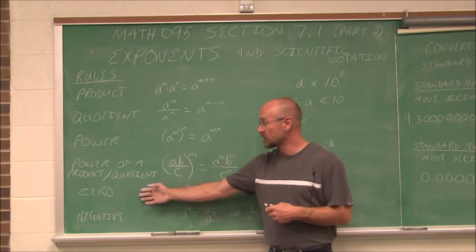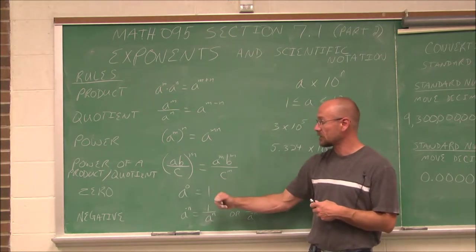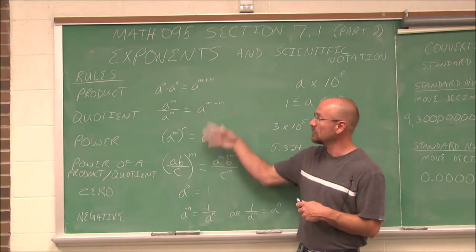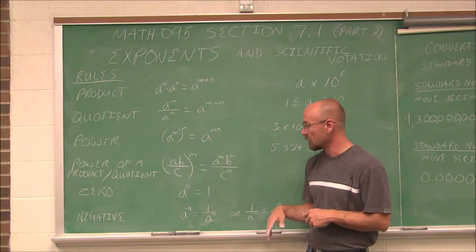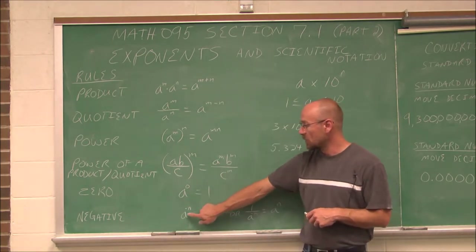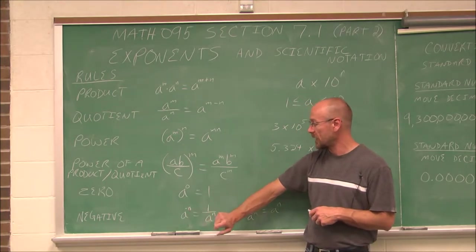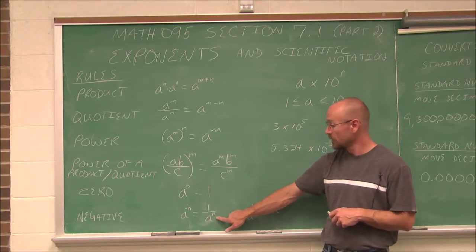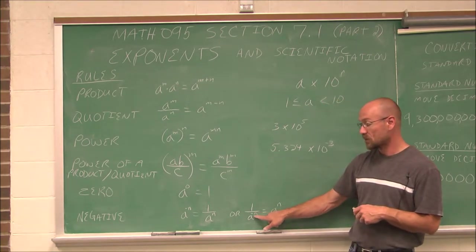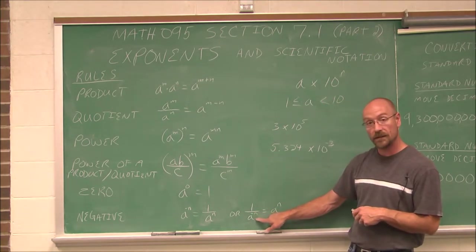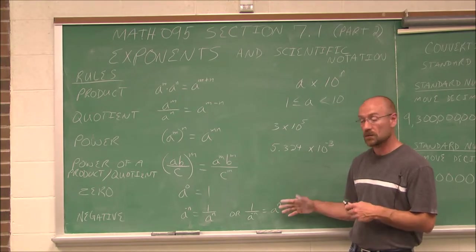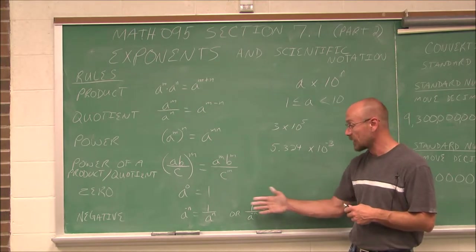Then we have the zero rule of exponents: anything to the zero power is 1, unless that base is 0 — if any of these bases are 0, none of this really applies. And then we have the negative exponent rule: if we have a base to a negative exponent, we can take its reciprocal. Or if we have a negative exponent in the denominator, we can move it to the numerator. It's the same rule.